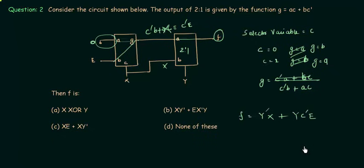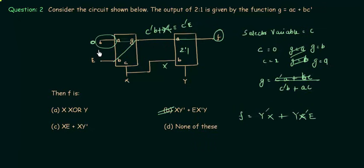Looking at the options, and since C equals X, the final expression is Y'·X + E·X'·Y — which simplifies to option B being correct. This is the way to approach the problem: you have to break the assumption in your mind that whenever the selector variable is 0 you always link the first input. That is not always true because you cannot see inside the circuit block. That concludes the second problem.